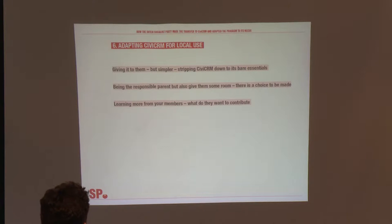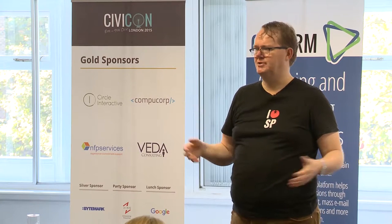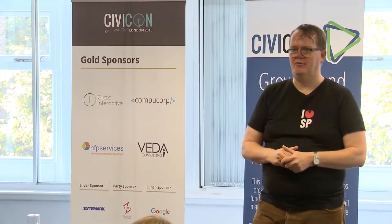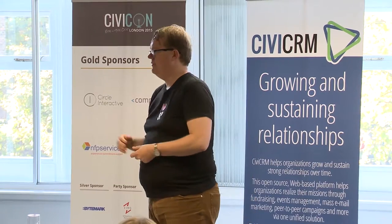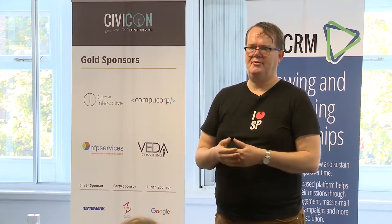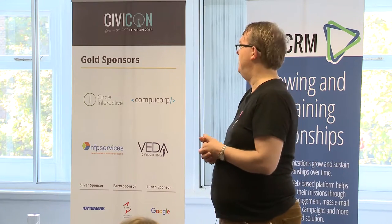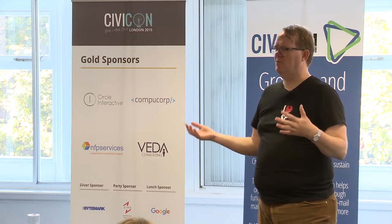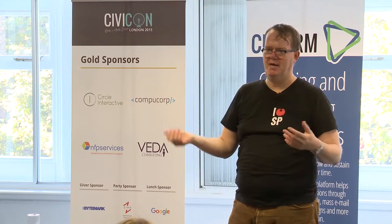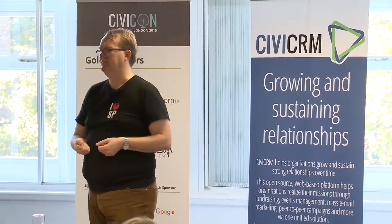Now we come to the local branch view. We've told CiviCRM how our organization works, and the next phase — which we are still testing with a few local branches — was giving them appropriate access. We had a lot of discussion in the summer about how to solve that puzzle, including what to give access to given privacy issues and the wide range of technical ability across different local branch volunteers. So we stripped the interface down to its bare essentials — just what we thought they needed.